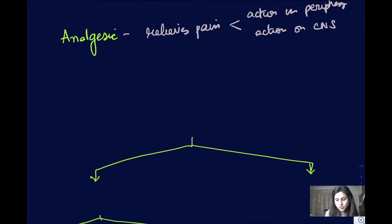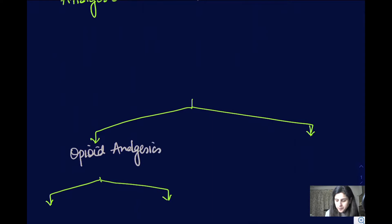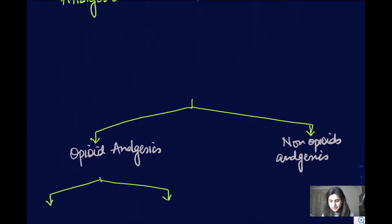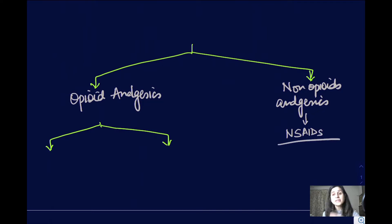Analgesics are of two broad types: opioid analgesics, which we are going to study in this lecture, and non-opioid analgesics. Non-opioid analgesics include drugs under the non-steroidal anti-inflammatory drugs, NSAIDs. They are analgesics but they are not opioids. For NSAIDs you can refer to my separate lecture on that topic.